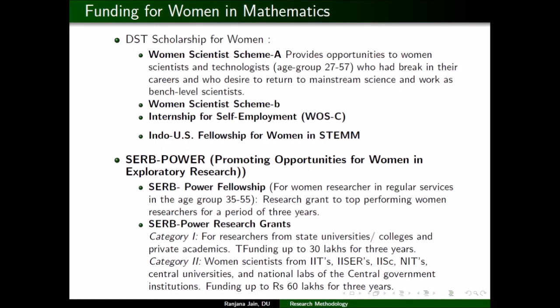The POWER Fellowship is for top-performing women researchers and is awarded for three years. The POWER Research Grant has two categories: Category 1 is for women working in state universities or colleges, with funding up to 30 lakhs for three years; Category 2 is for those working in IITs, ISERs, or central government universities, with funding up to 60 lakhs for three years.